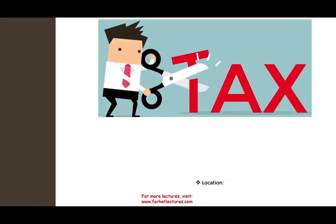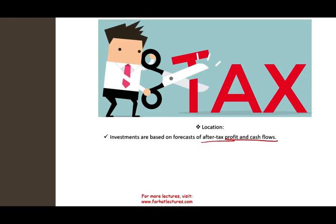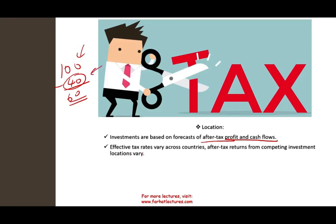For location, when you make a decision, you have to look at after-tax profit. If you're going to make a profit of $100 but pay taxes of $40, what matters is the $60 after-tax profit. We want to locate in places where that $40 is minimized. The effective tax rate varies across countries and sometimes within the same country, so after-tax return from competing investment locations will vary.